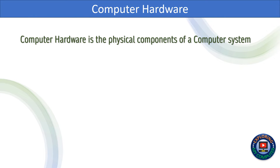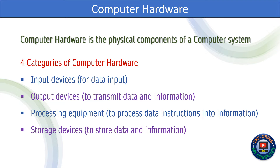Computer hardware is the physical components of a computer system. There are four categories of computer hardware: 1. Input devices for data input. 2. Output devices to transmit data and information. 3. Processing equipment to process data instructions into information. 4. Storage devices to store data and information.